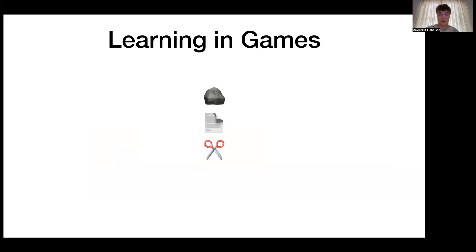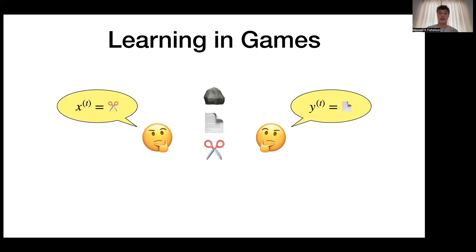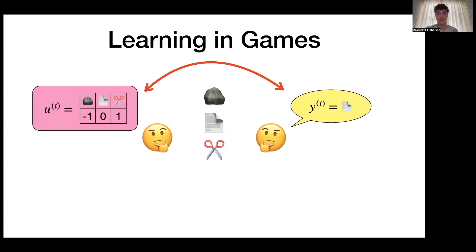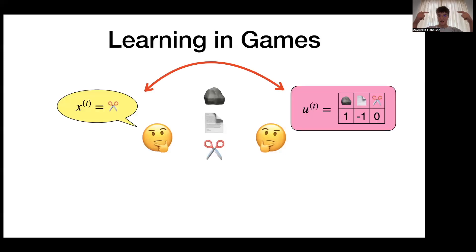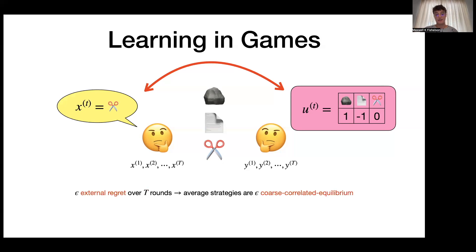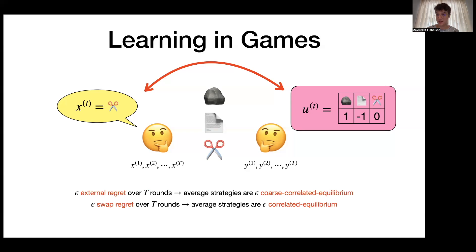Consider Rock-Paper-Scissors. Our goal is to compute an equilibrium. We can instantiate a no-regret learning algorithm for each player and have them repeatedly choose actions. From each player's perspective, the other player's selection determines their reward vector, so each player is doing a valid online learning task. If each learner has epsilon external regret over T rounds, the time-average strategies correspond to an epsilon-approximate coarse-correlated equilibrium. With the stronger guarantee of swap-regret minimization, their time-average strategies converge to an epsilon-correlated equilibrium.